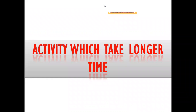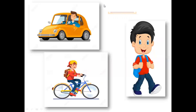Move on to next — activity which takes longer time. Children, observe. First, the man is going by car. Then, the boy is moving by cycle. The third boy is going by walk. So, which activity takes longer time, children? Very good — exactly. By walk, it takes longer time.